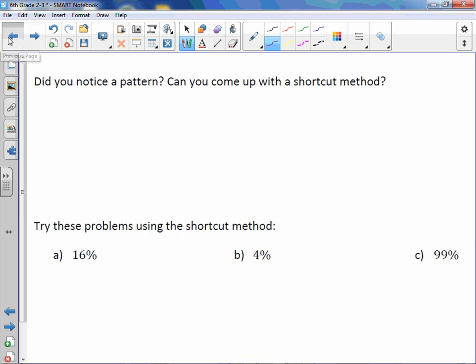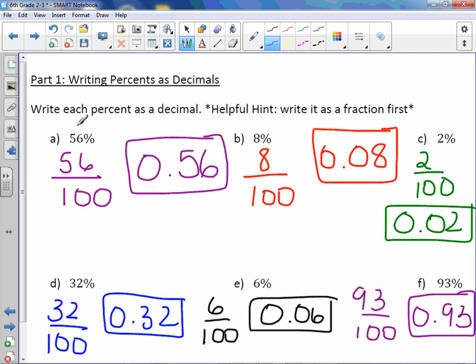Is there a pattern? Let's take a look. I went from 56% to 0.56, 8% to 0.08, 2% to 0.02, 32% to 0.32, 6% to 0.06, and 93% to 0.93. Here's the shortcut.